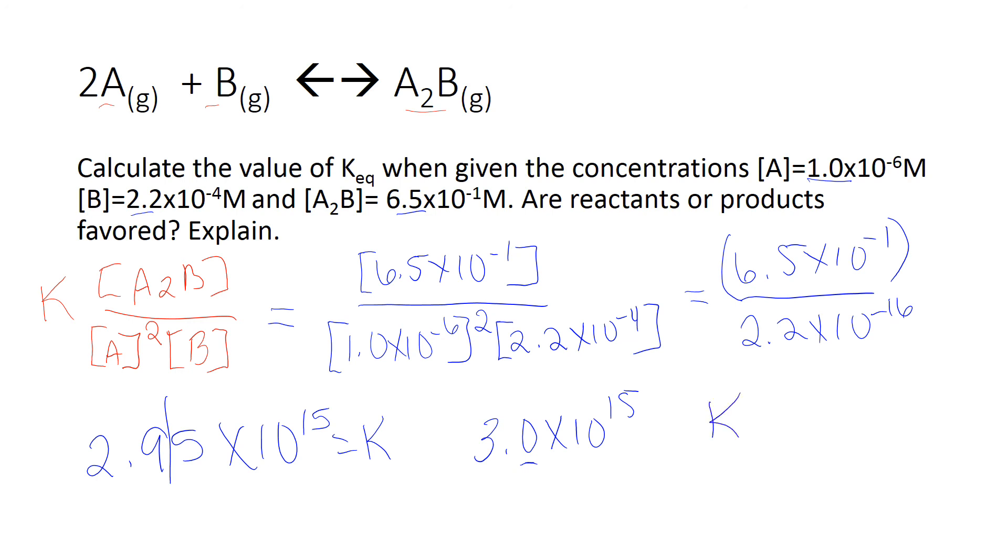Looking at this number, it's very large. So K is greater than 1. Therefore, my products are favored at these concentrations.